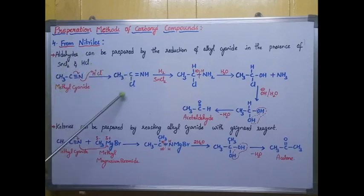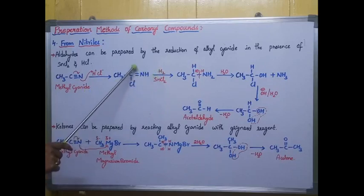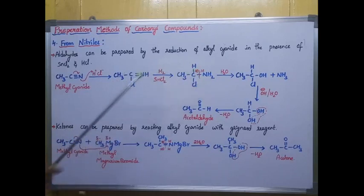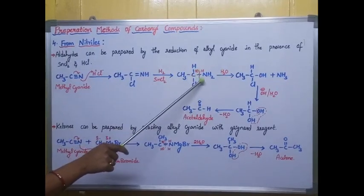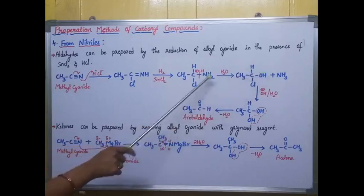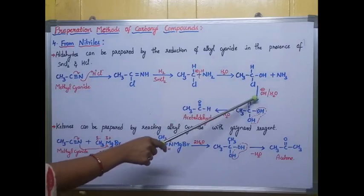In the next step, I reduce with stannous chloride in the presence of hydrogen. I break one more pi bond in the double bond — one hydrogen is added to carbon and one hydrogen is added to nitrogen, giving a C–H bond and an NH2 group. Then I perform hydrolysis: breaking the bond, adding hydrogen on one side and OH on the other, forming a C–OH bond and releasing NH3.